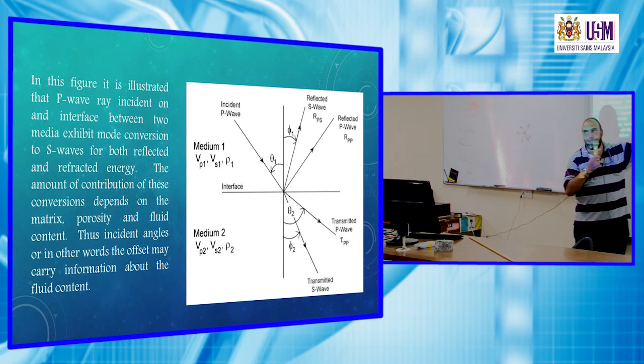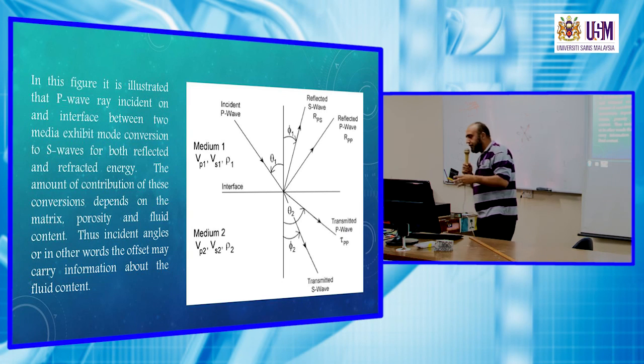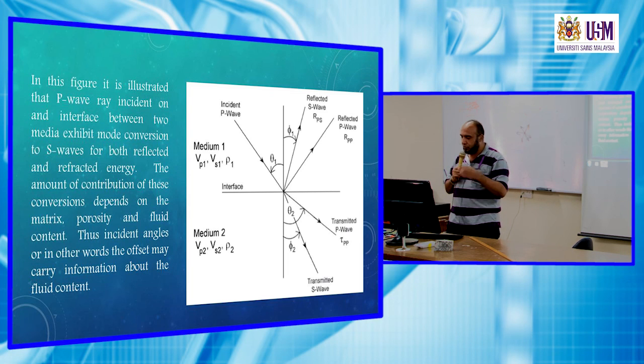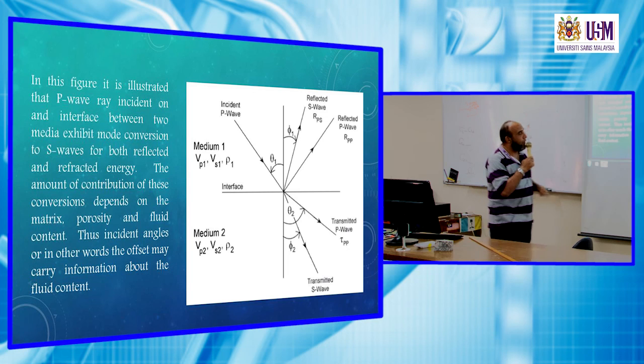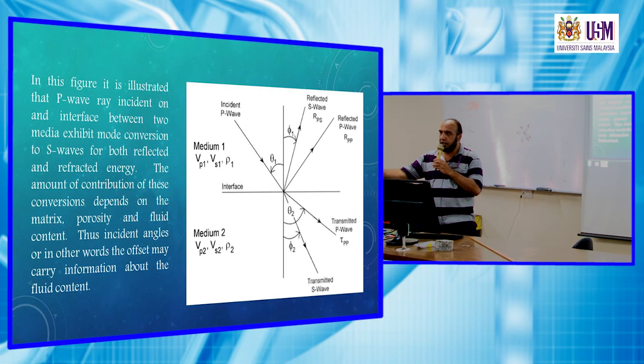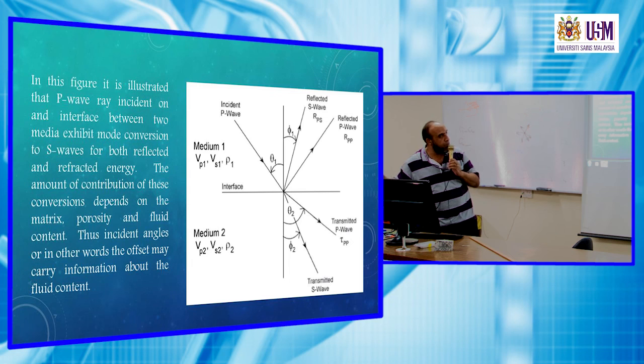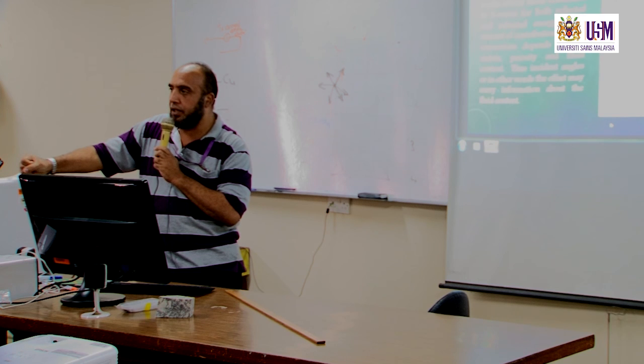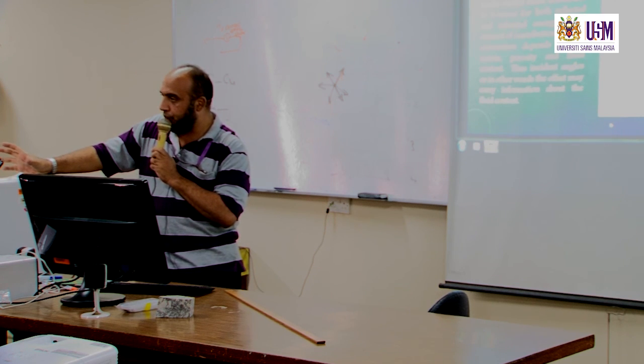The energy carried at the incident ray is now subdivided or distributed over four types of waves, of rays, two reflected and two refracted. If we assume that we distribute evenly, so we have 0.25 for each of them. However, such a distribution is dependent on the angle of incidence theta. So the angle of incidence theta plays an important role, and the change in the RPS and RPP is dependent on both the lithology and the fluid content.